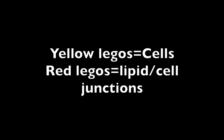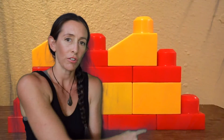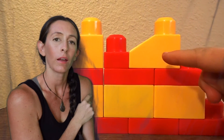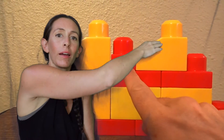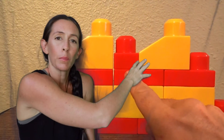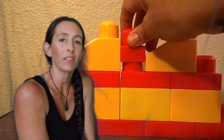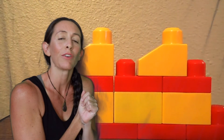I think we need the Legos. Here we are looking at our cells. Here is our cell junction — the goo that holds our keratinocytes together. Salicylic acid, when applied on top, comes in and breaks up these bonds between the cells, causing exfoliation.